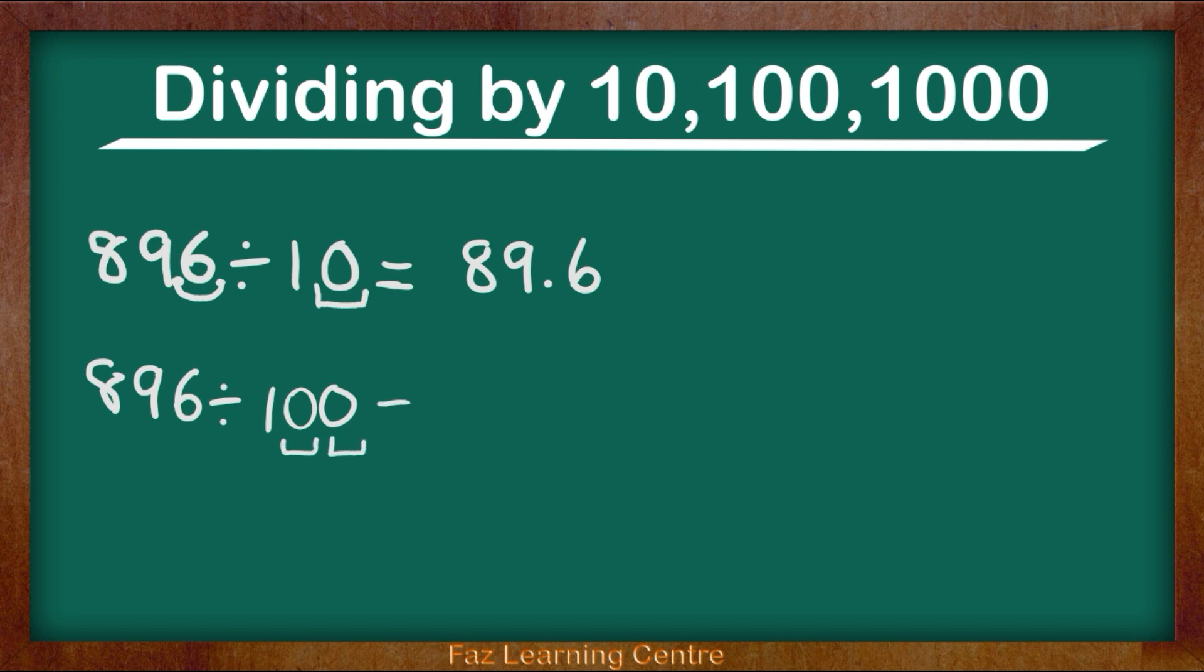The next thing you are going to do is you are going to make your decimal point visible in the whole number 896. Here is my decimal and it is now visible. We are going to be moving towards our left 2 times because we have 2 zeros. Remember when we are dividing, making the answer smaller, we are always moving towards our left.